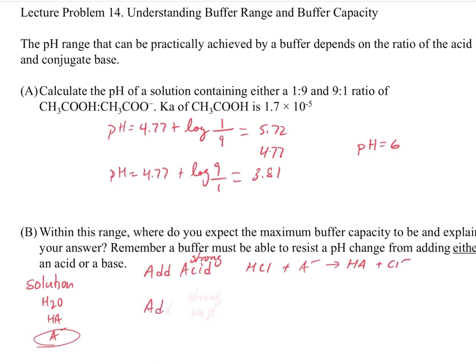If we were to add a strong base, like NaOH, that's going to react with the strongest acid we have around, which is HA. And so this is going to give us A minus plus Na plus.